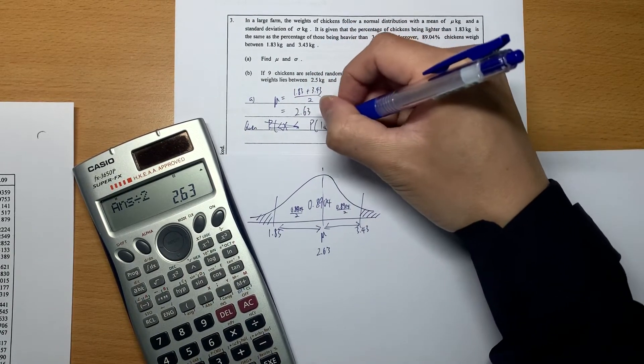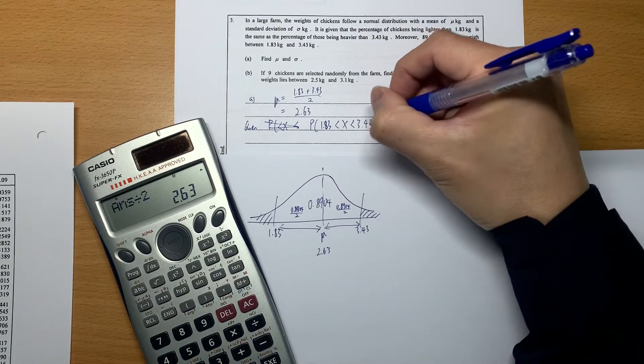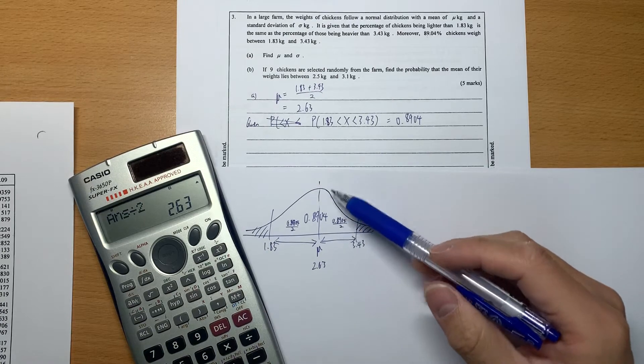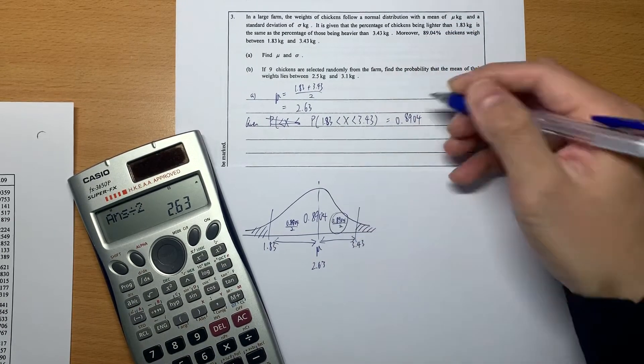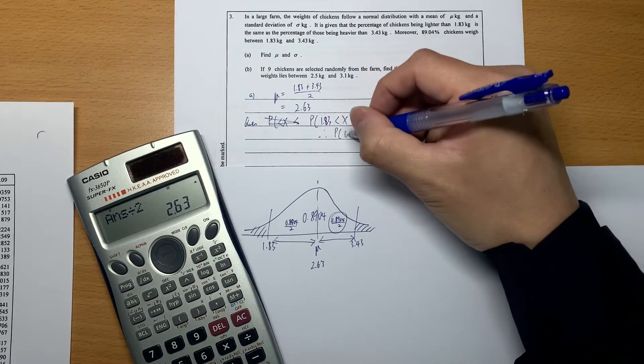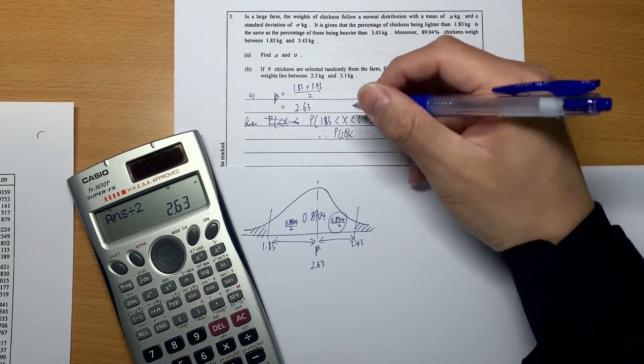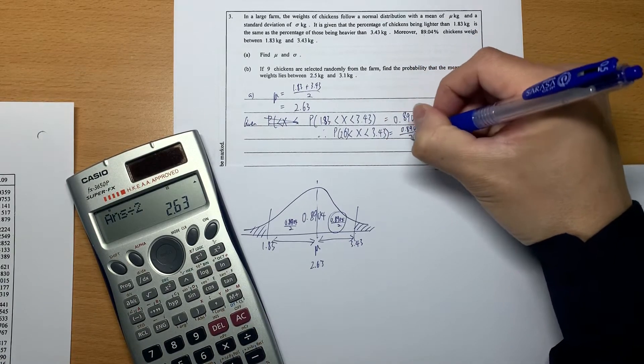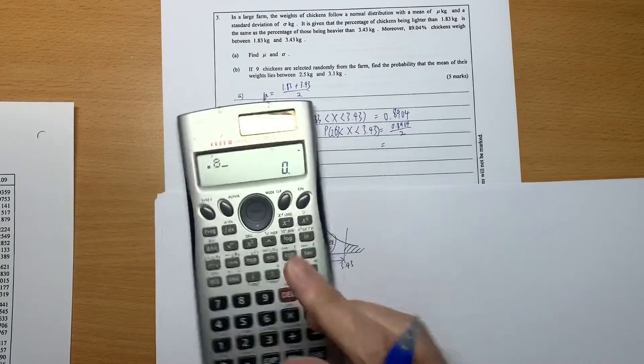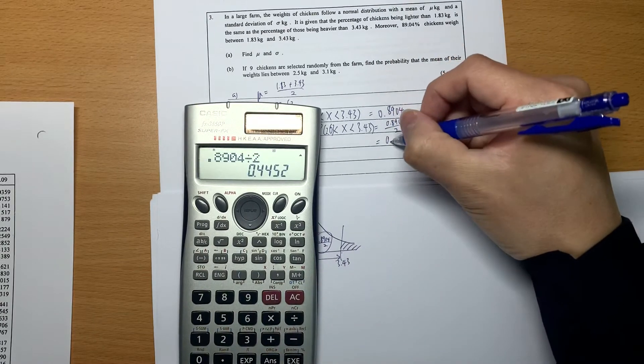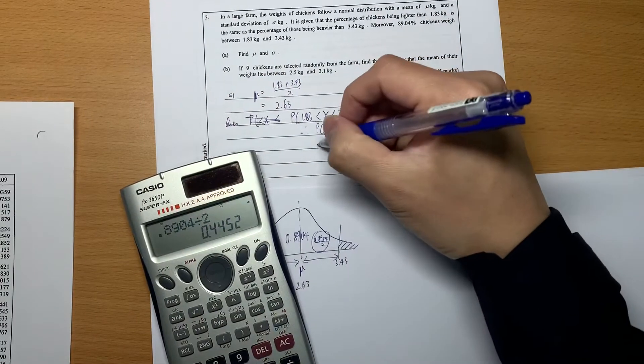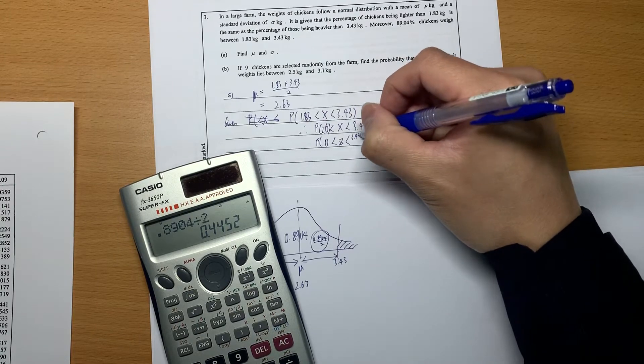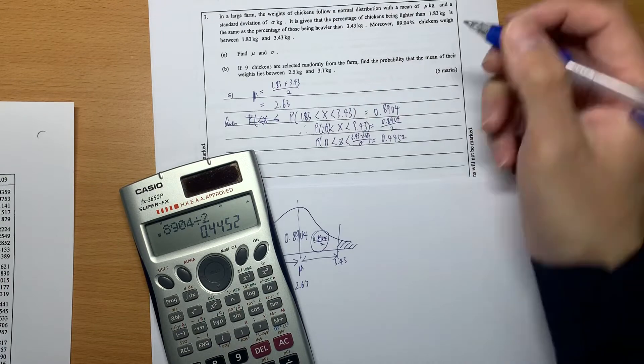X between 1.83 and 3.43 is 0.8904. Because we want you to use the standard normal distribution table, that's why we divide by 2. We're interested in this one. So P of X from 2.63 to 3.43 is 0.8904 divided by 2. At the same time, we change X to z, the standard score. This is 3.43 minus 2.63 divided by σ, which we don't know yet.